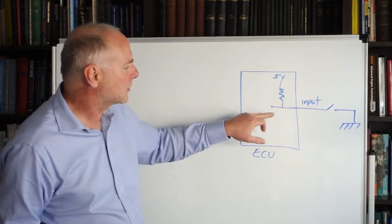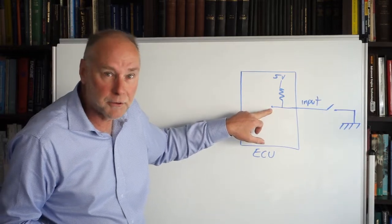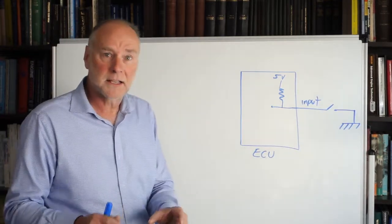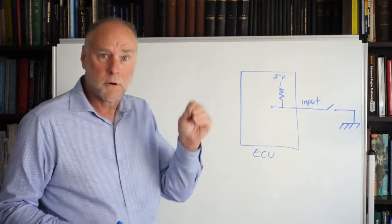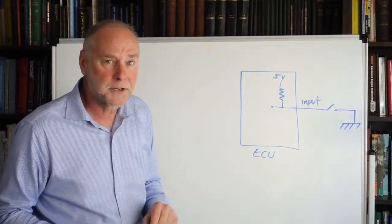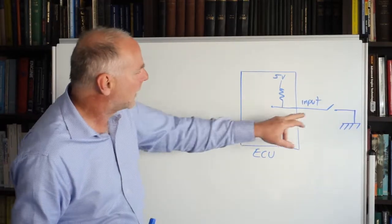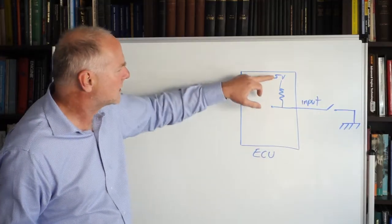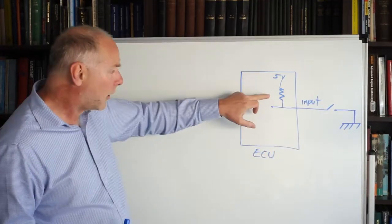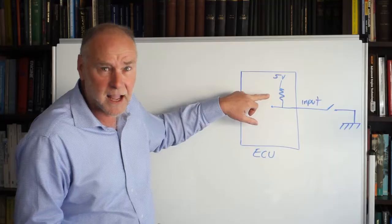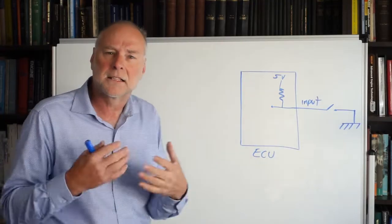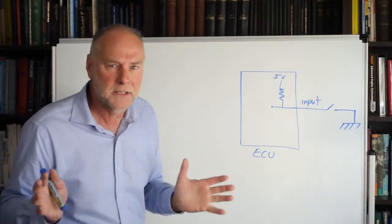When we close the switch, we pull that input back down to ground. So we can either see ground zero volts, or five volts, depending on the position of the switch. It's never floating. Now, if you're saying to yourself, but when that switch is closed, isn't there a short circuit to ground? No, because here we have a resistor, and that's a high value resistor that lets only a tiny amount of current flow, so there's no drama.